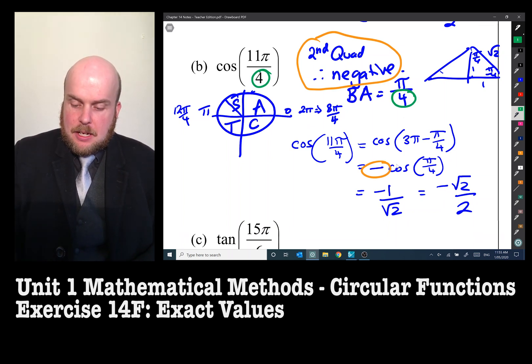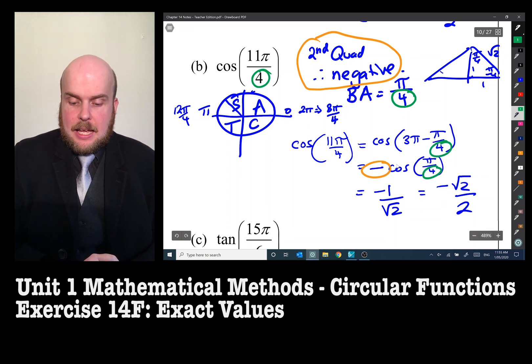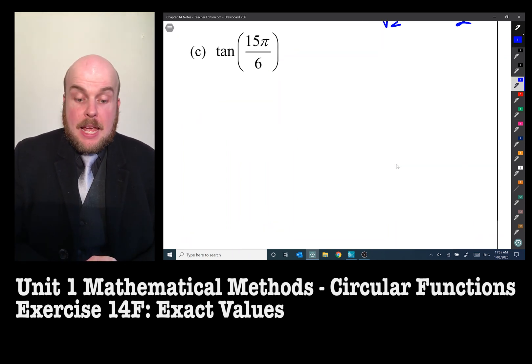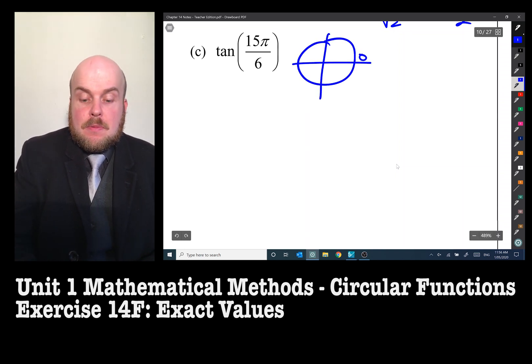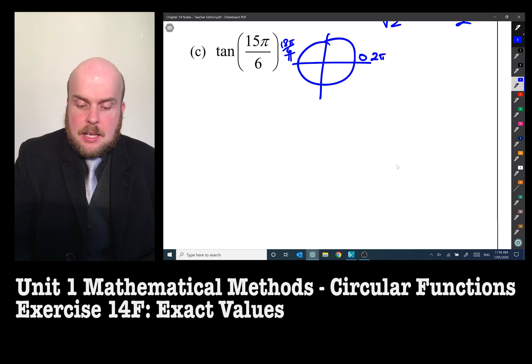That will help us identify that that is the base angle. Tan 15 pi on six. So 15 pi on six—what we're going to need to do is we're going to need to know what quadrant that's in. So zero, pi or six pi on six, two pi is 12 pi on six, three pi is 18 pi on six. Okay, this is really interesting. So we've got 12 pi on six, we've got 18 pi on six, 15 pi on six. That's bizarre.